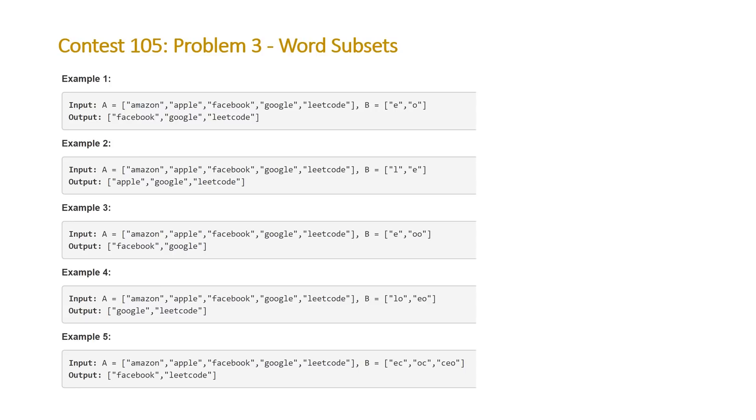So let's take a look at the examples that LeetCode gave us. So here are five examples. Taking a look at the first one, we're given a list of words in A and then a list of words that just happen to be characters in this case in B. Basically, what the question is asking is which of the words in A have all of the words in B as subsets of them. So which of the words in A have each of these characters? So you can see that the only three words of the five that we're given that have both an E and an O are Facebook, Google, and LeetCode.